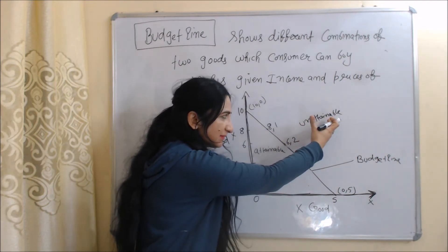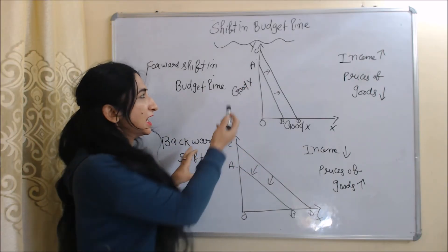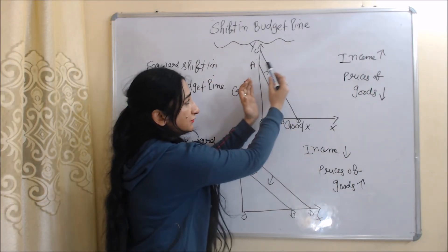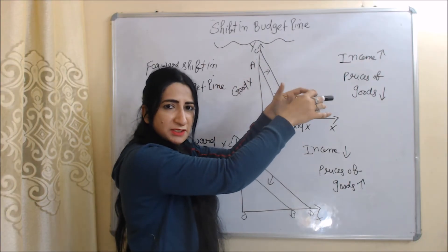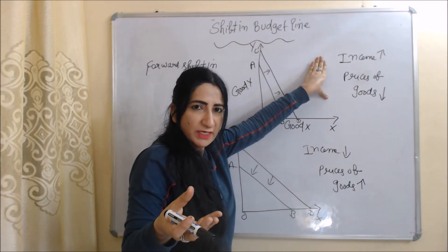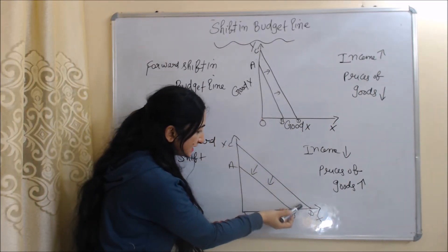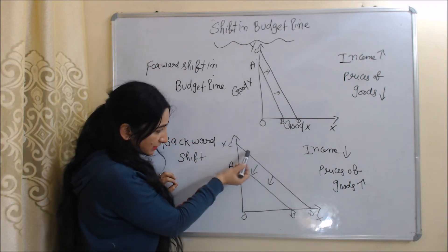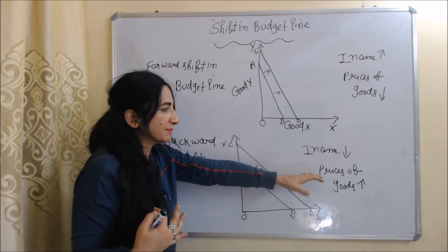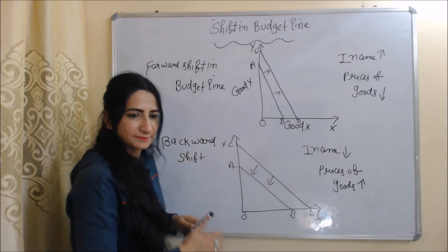The budget line shifts forward from AB to CD when income increases or prices of goods fall — obviously we have more money and the budget increases. On the other hand, the budget line shifts backward from CD to AB when income falls and prices of goods increase — we have less money and the budget reduces.